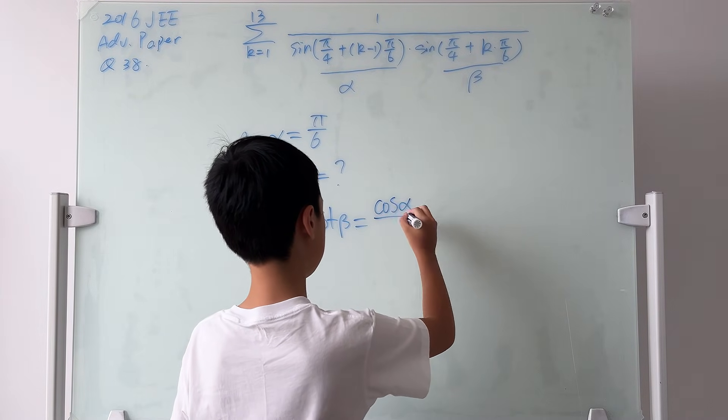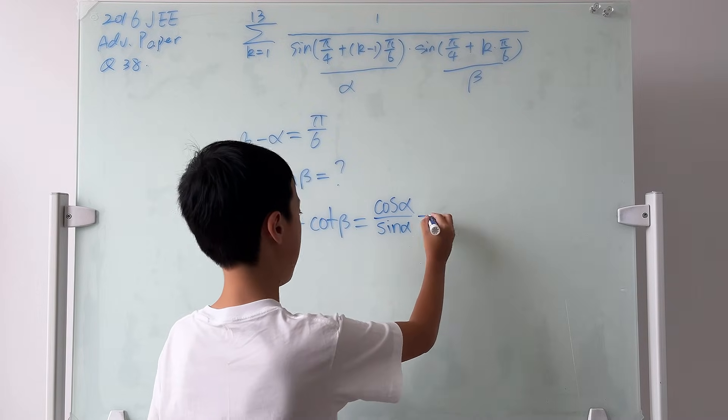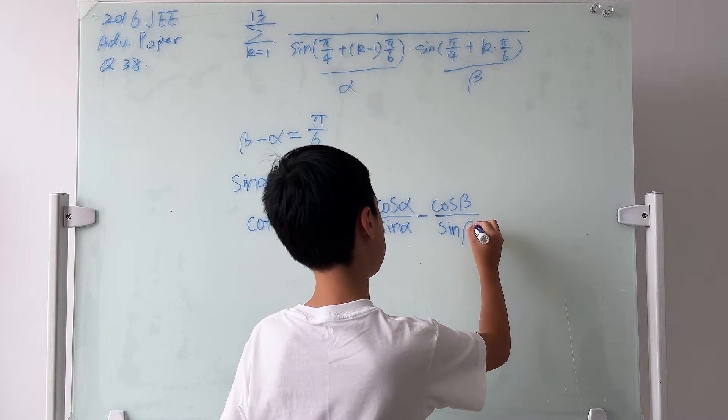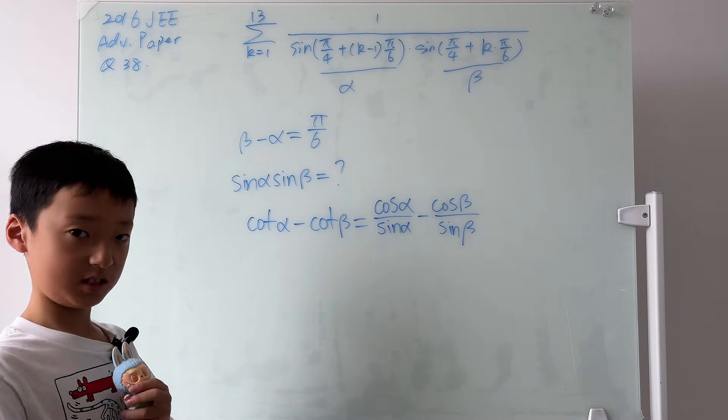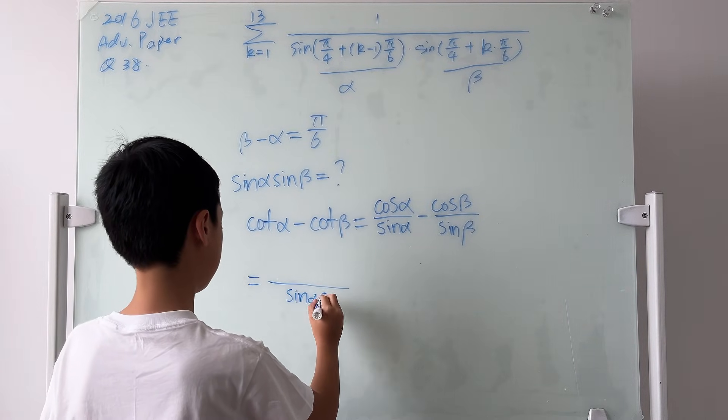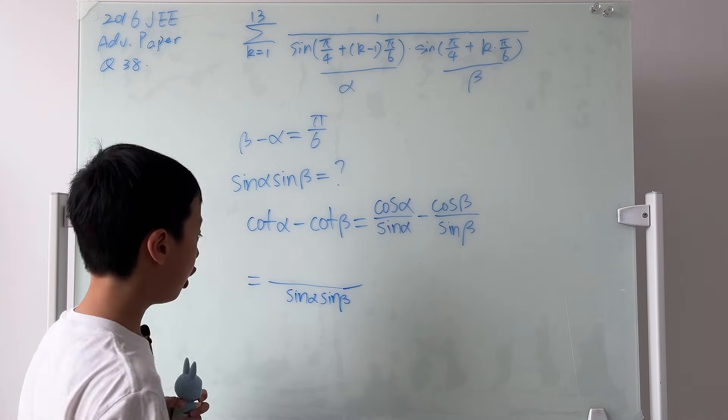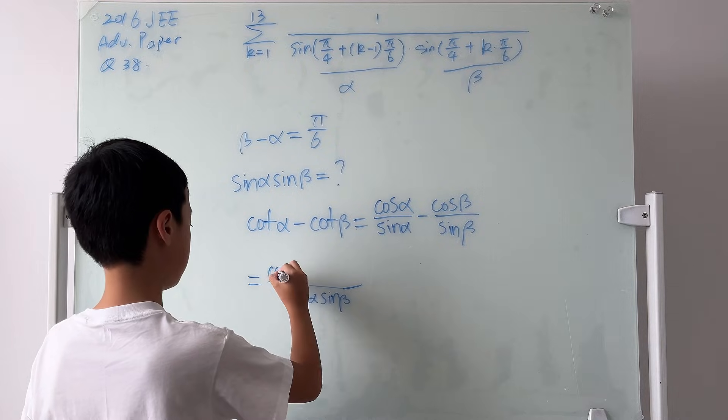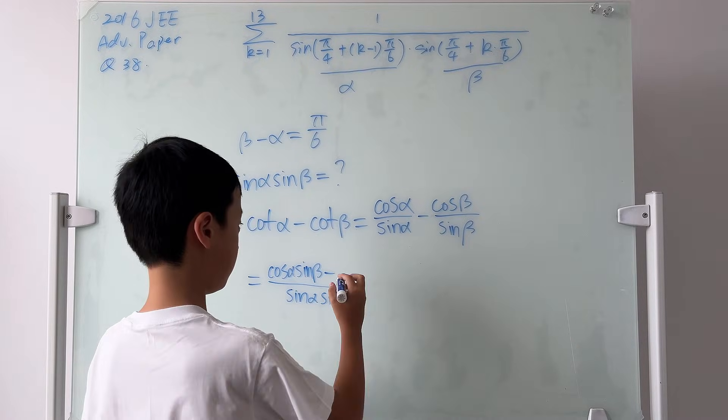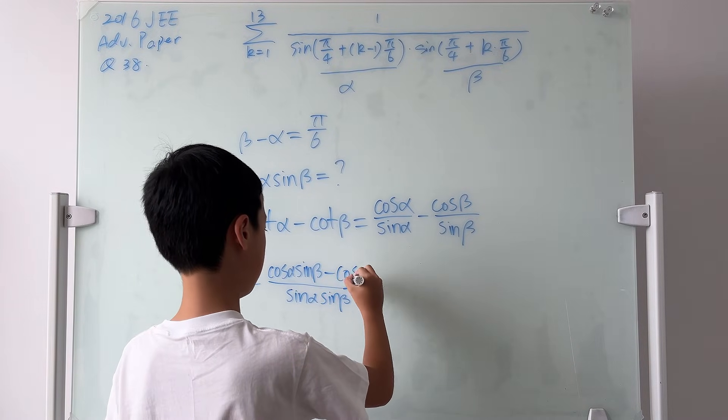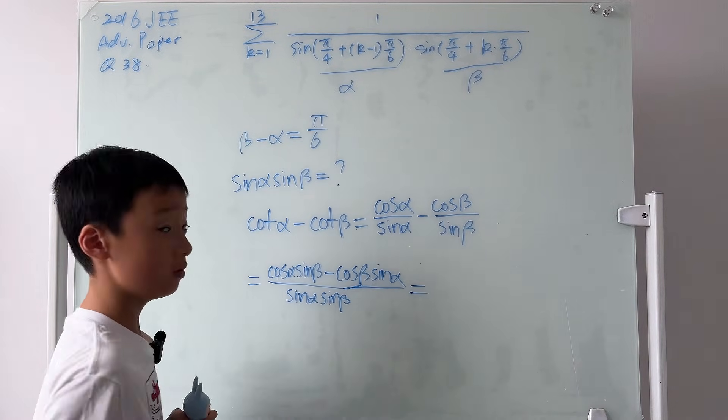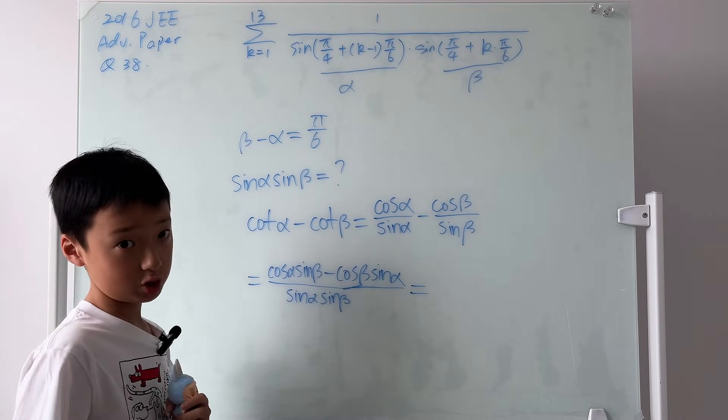Cosine alpha over sine alpha minus cosine beta over sine beta. Now we can make a common denominator, which would be sine alpha sine beta. And the top would be this times that, which is cosine alpha sine beta, minus this times that, so cosine beta sine alpha.